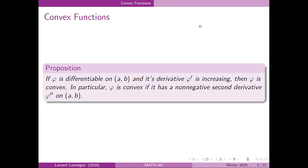We have the following proposition: if phi is differentiable on (a, b) and the derivative is increasing, then phi is convex. If the derivative is increasing, then we know that the second derivative is non-negative on that open interval — these are equivalent statements. So we'll prove the first statement.